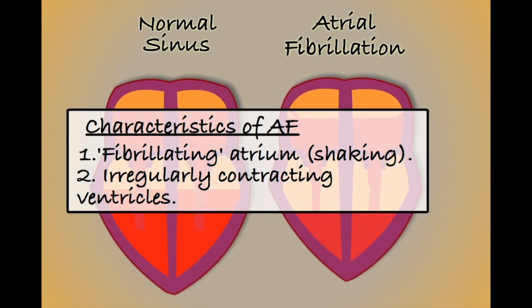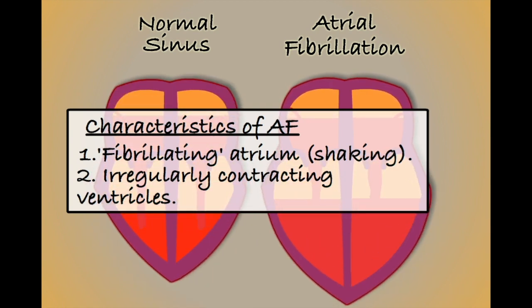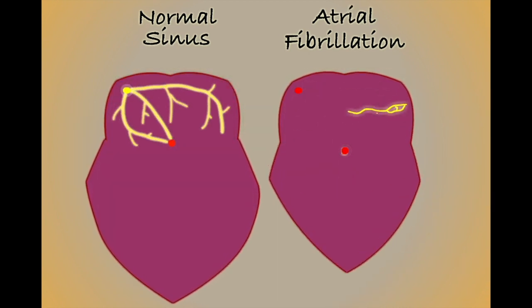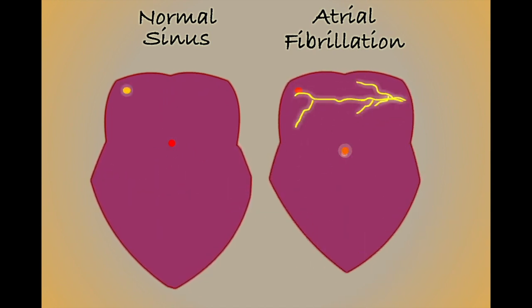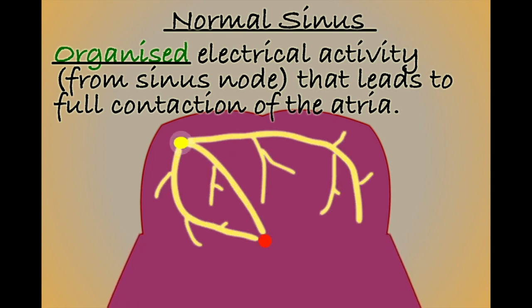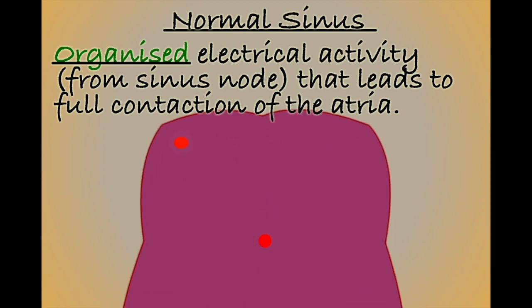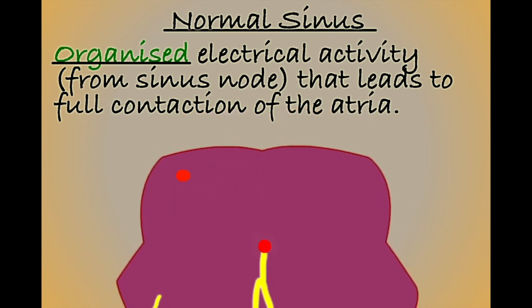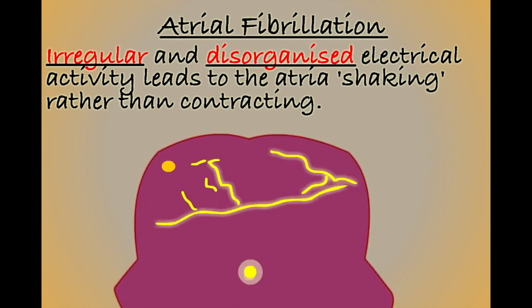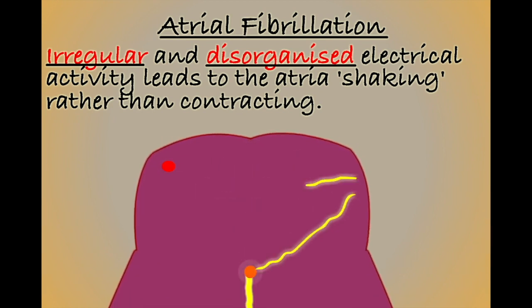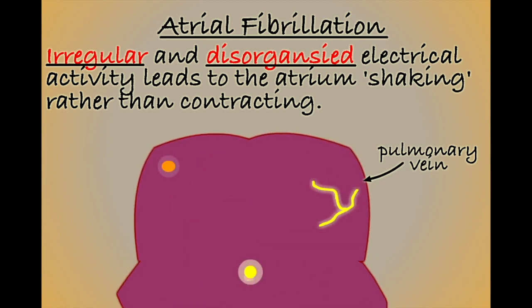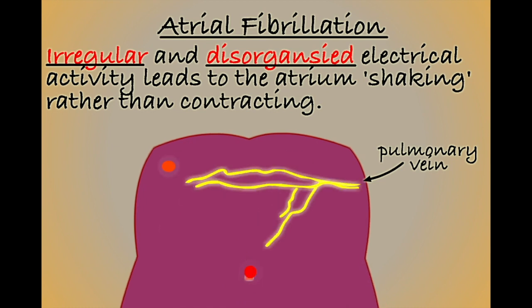To understand why this is occurring, we must look at how electrical activity is being conducted within our two hearts. In a healthy heart, electrical impulses are regular and organised, flowing through the atria to cause contraction of the chambers. In this example of AF, the electrical impulses are not arising from the sinus node but from the roots of the pulmonary veins. Conduction is rapid and irregular, causing the atria to shake rather than contract.